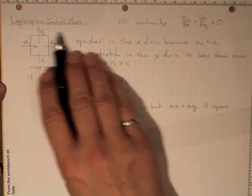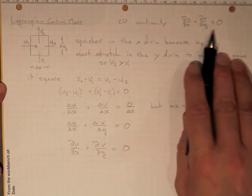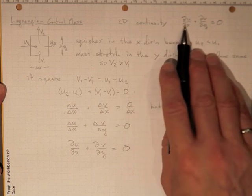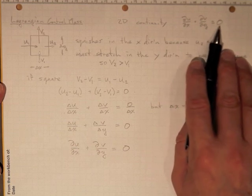We can look at a Lagrangian control mass in the same way to see what the consequences of conservation of mass are. So we know the equation should turn out to be di u di x plus di v di y is equal to zero.